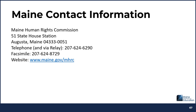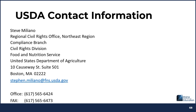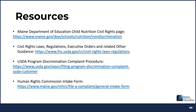Here is the Maine contact information: Maine Human Rights Commission, 51 Statehouse Station, Augusta, Maine 04333-0051. Here is the USDA contact information for our Northeast Region Civil Rights Office. Below are several resources that relate to civil rights requirements: the Maine Department of Education Child Nutrition Civil Rights page, civil rights laws, regulations, executive orders and other related guidance, USDA Program Discrimination Complaint Procedure, and the Human Rights Commission Intake Form.